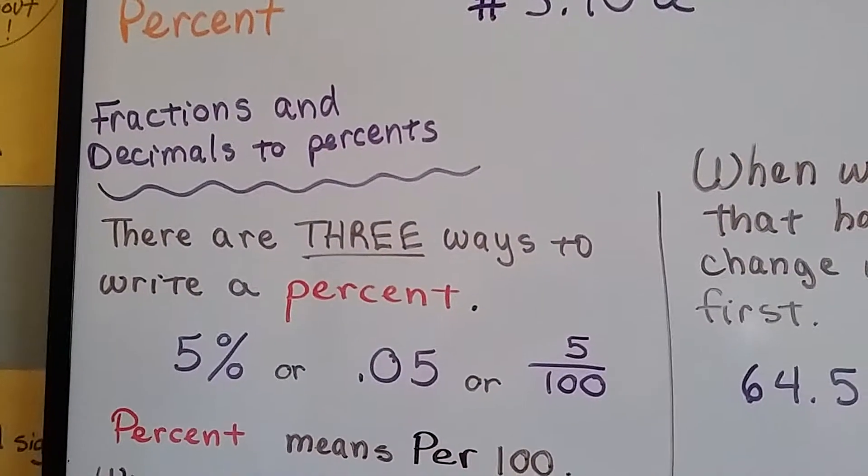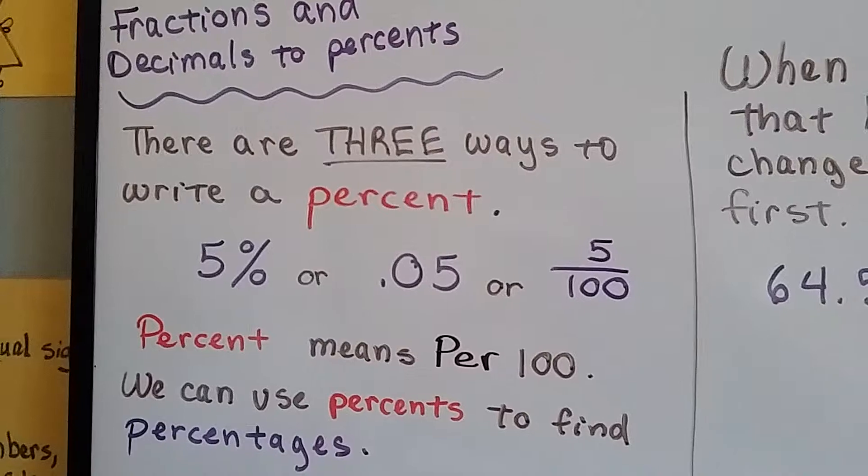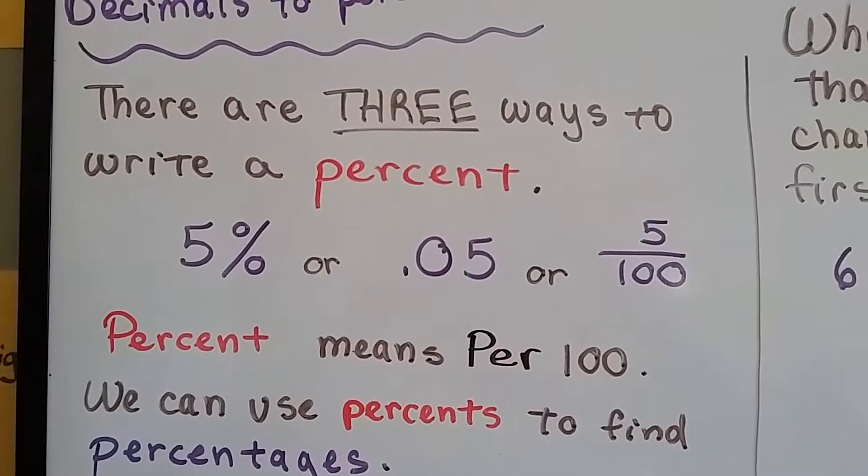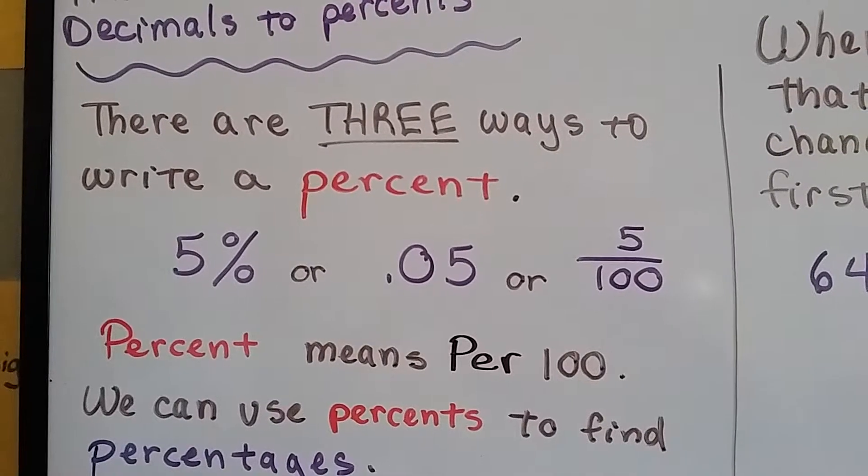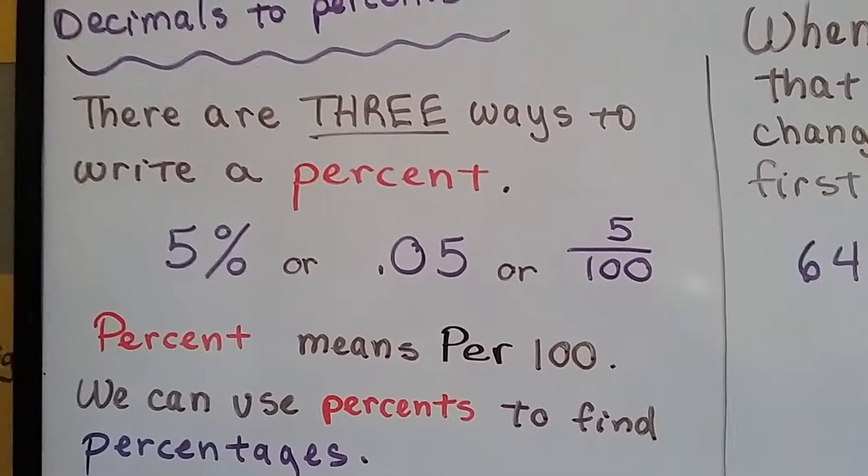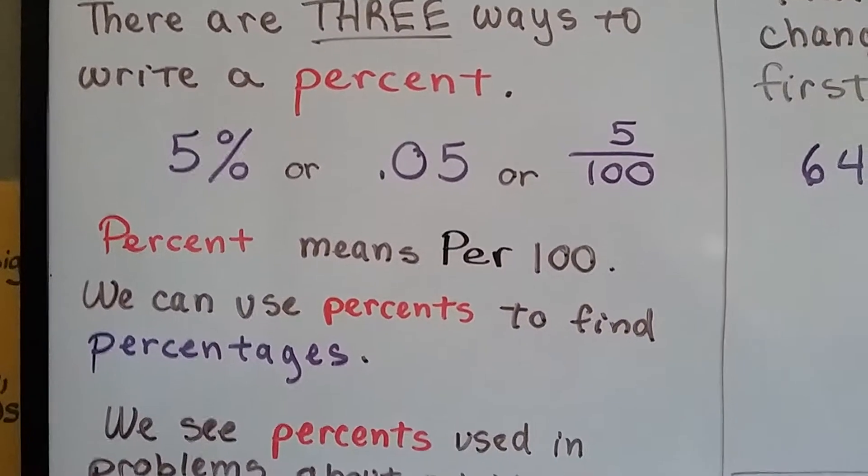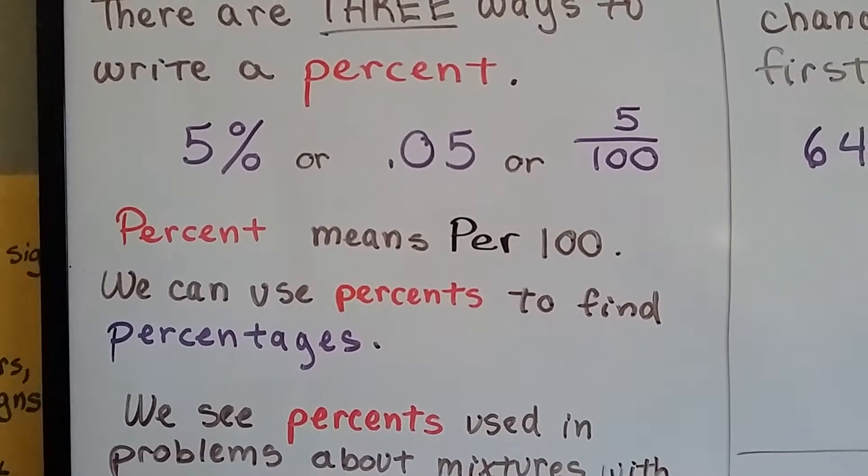I'm going to do fractions and decimals to percents. So there's three ways to write a percent. We can write it with a 5 with the percentage sign, or as 0.05, or 5 over 100, as five hundredths. Percent means per 100. We can use percents to find percentages.